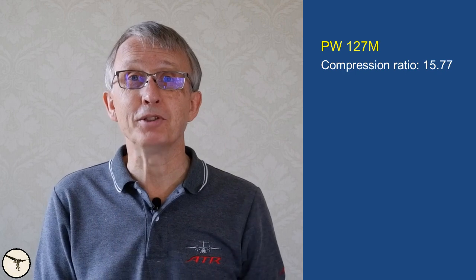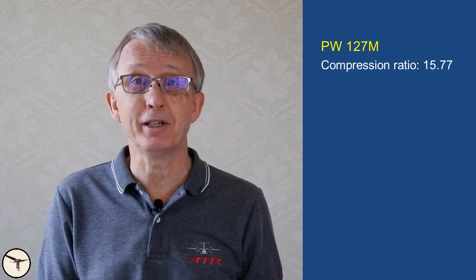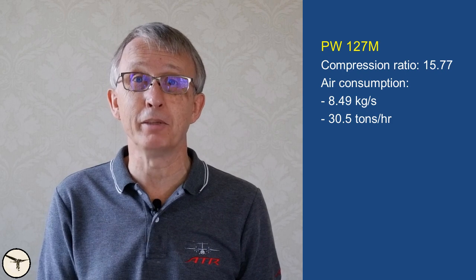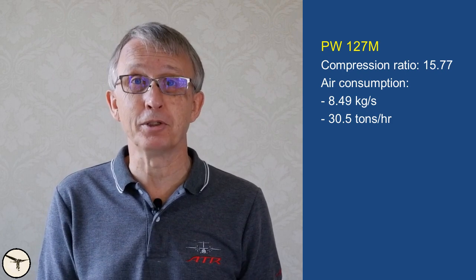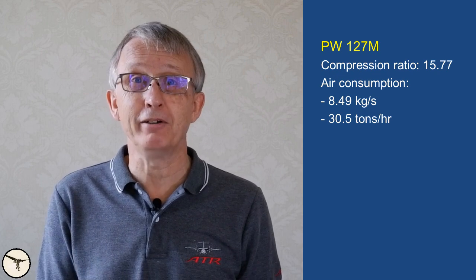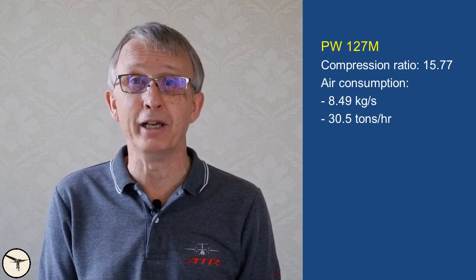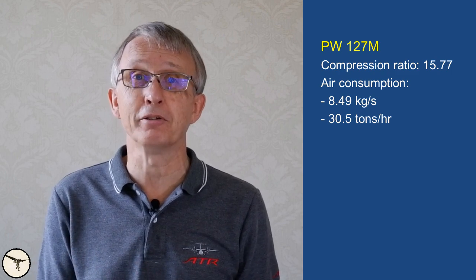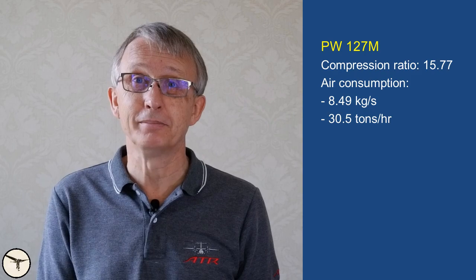The PW127 has a compression ratio of 15.77 and an airflow of 8.49 kg per second — that's 30.5 tons of air per hour. Two thirds of that air is used to combust the fuel. The rest is used to cool the engine and to supply other systems such as the air conditioning. We call this bleed air.